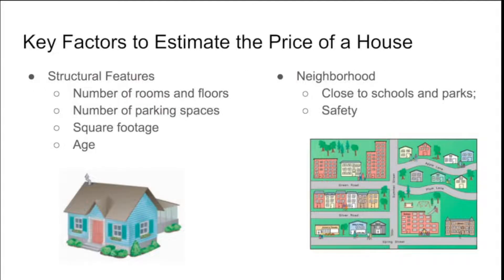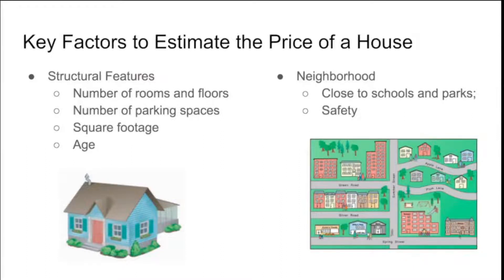There are some key factors that influence the price of a house. Some of them are the structural features of the house — for instance the number of rooms and floors, the number of parking spaces, the square footage, and the age. They all influence the price, and also the neighborhood where the house is located — for instance if the house is close to schools and parks and if the neighborhood is safe.